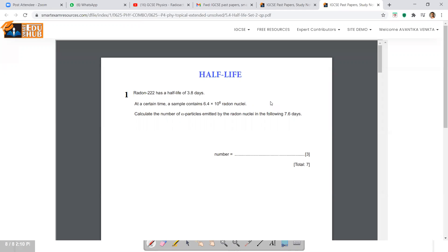Hello, so here is a question from half-life. The question reads: Radon-222 has a half-life of 3.8 days. At a certain time, a sample contains 6.4×10^6 radon nuclei. Calculate the number of alpha particles emitted by the radon nuclei in the following 7.6 days.